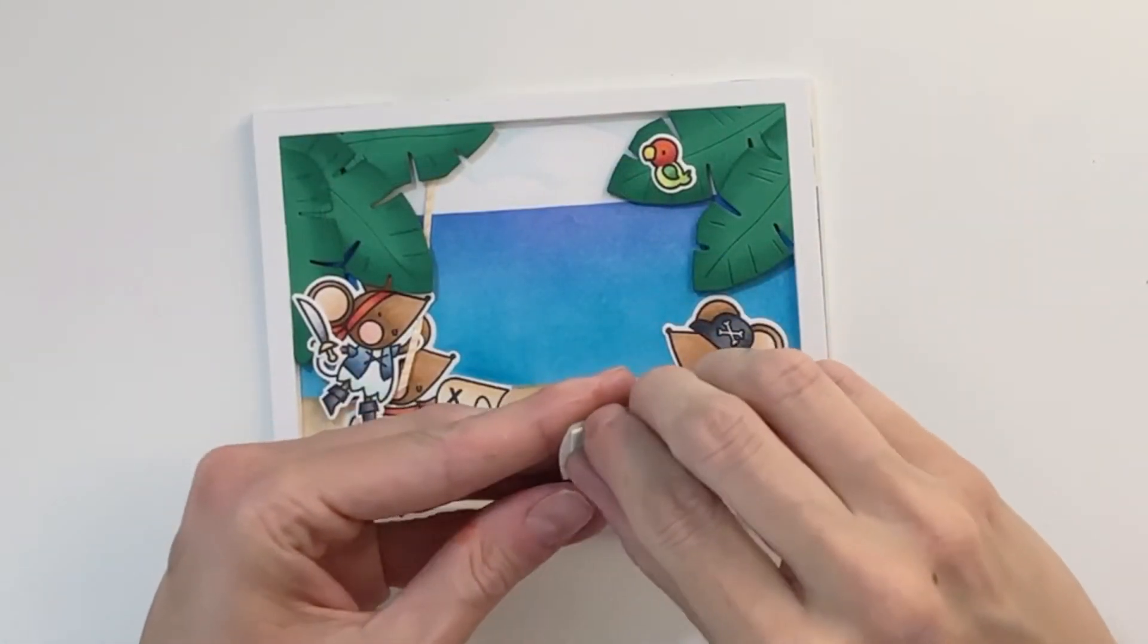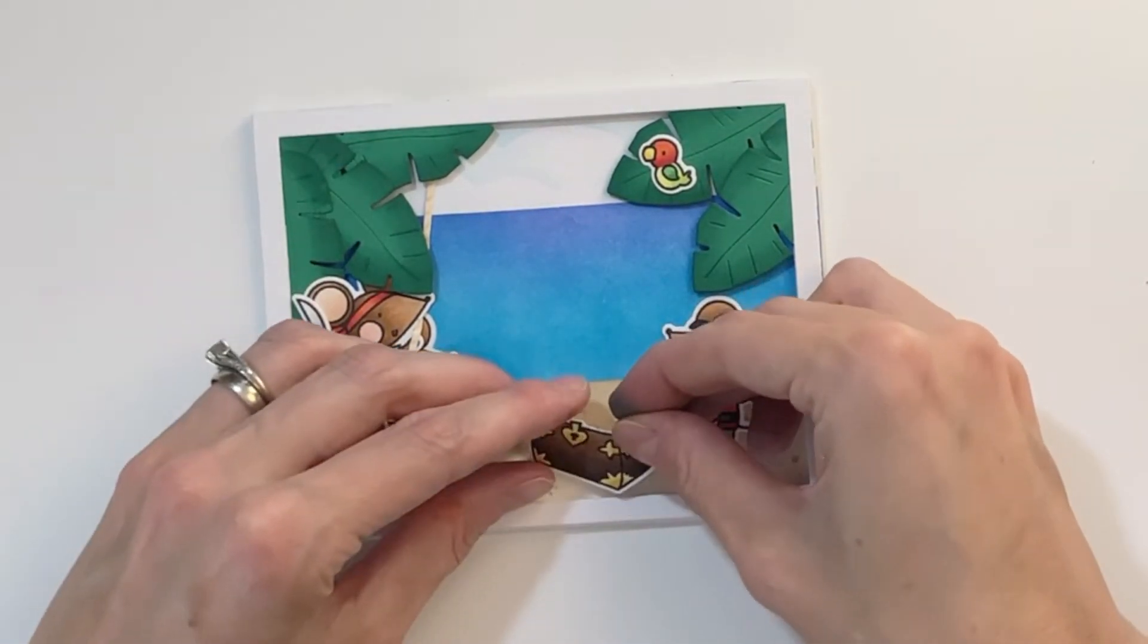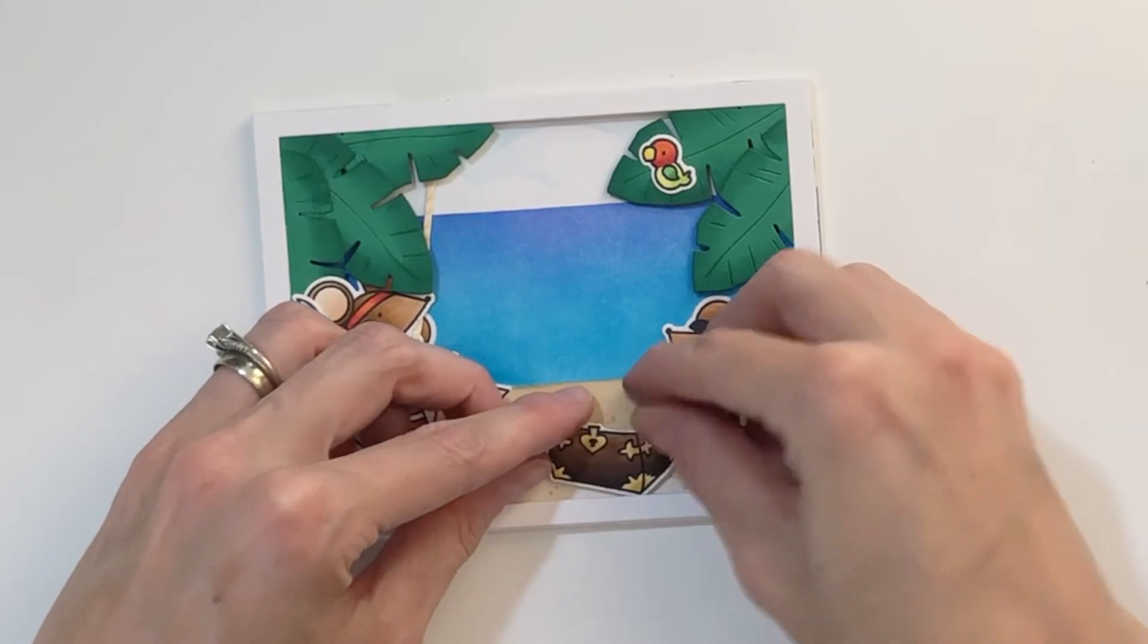I'll repeat that process for the bottom part of my treasure chest. Fussy cut that out first. And then once I'm done fussy cutting it out and using the white gel pen, I'll add some foam tape to the back. I'm going to stick down my bottom half first.